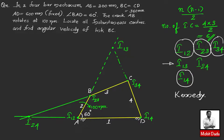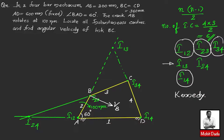Now we find the angular velocity of link BC, which is link 3. First, we examine link 2, which has pure rotation about point A. Its angular velocity is given as 100 rpm in the clockwise direction. Point B will have a velocity vector perpendicular to line AB. Since A is a fixed point, this velocity is simply called V_B.